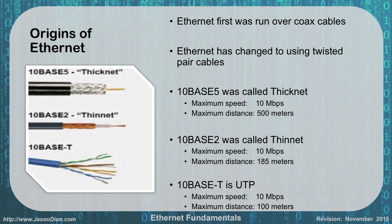Ethernet changed over to twisted pair cabling with what was called Cat3, or 10BaseT wiring. The T stood for twisted pair — originally UTP, unshielded twisted pair. Its maximum speed was 10 megabits per second, but it could only go 100 meters. It became very popular because it was inexpensive and easy to work with. As we improved, Cat3 gave way to Cat5 cabling, increasing speed up to 100 megabits per second. Those three types — thicknet, thinnet, and 10BaseT (Cat3) — illustrate the evolution.